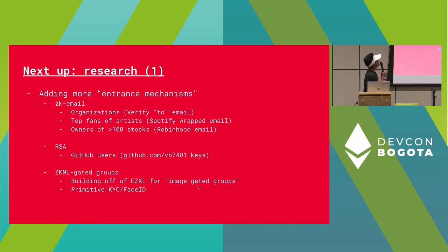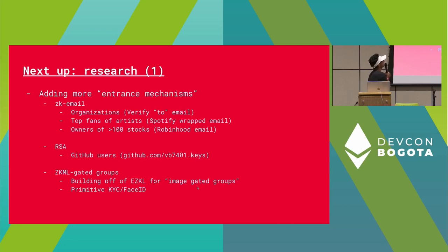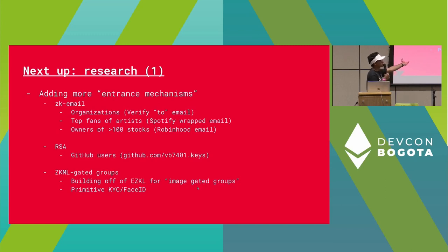We want to have a lot more different groups — not just Ethereum and Semaphore groups. ZK email, which is going to be presented next, is going to give us access to a lot of interesting groups. You can verify that someone owns a Twitter.com email or a Facebook.com email. You can prove you're a top fan of an artist by looking at some Spotify Wrapped emails. You can prove that you own some amount of stocks with a Robinhood email. Email really opens the gates to a bunch of really interesting groups.